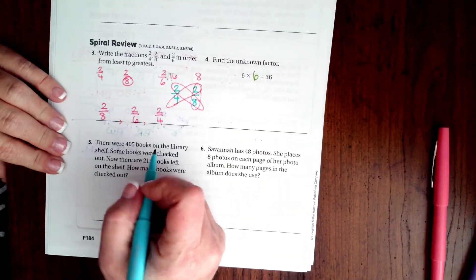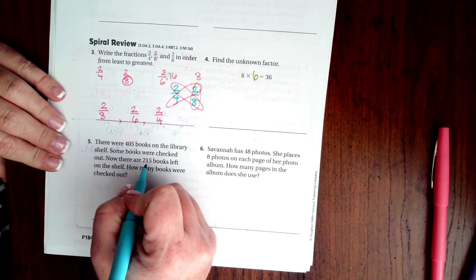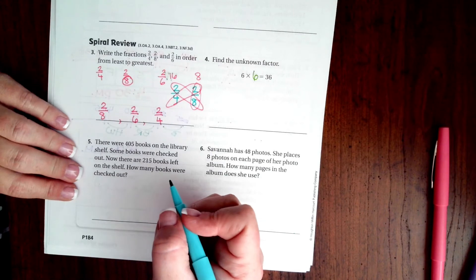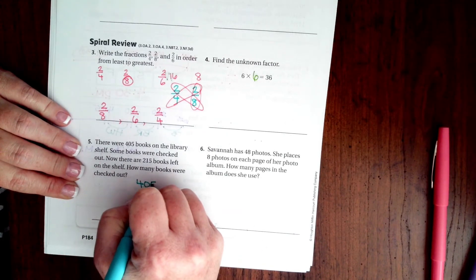There were 405 books in the library shelf. Some books were checked out. Now there are 215 books left on the shelf. How many books were checked out? I'm going to start with 405 and subtract 215.